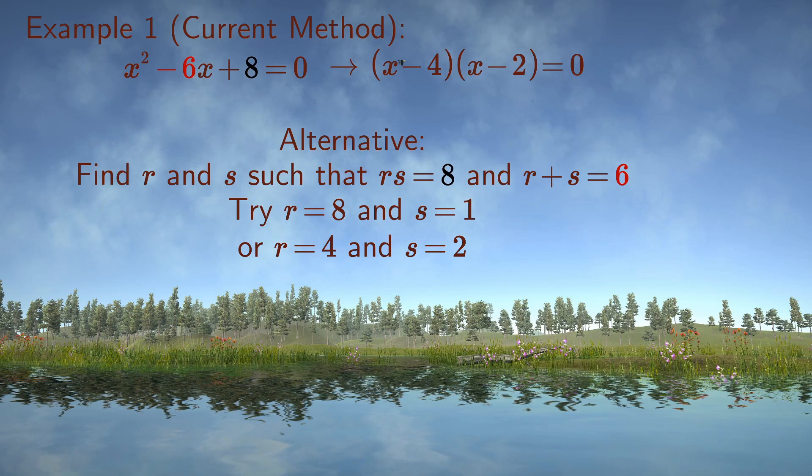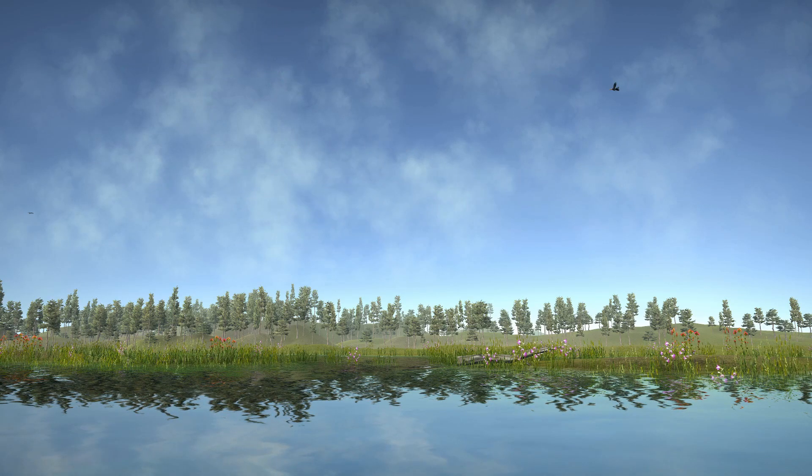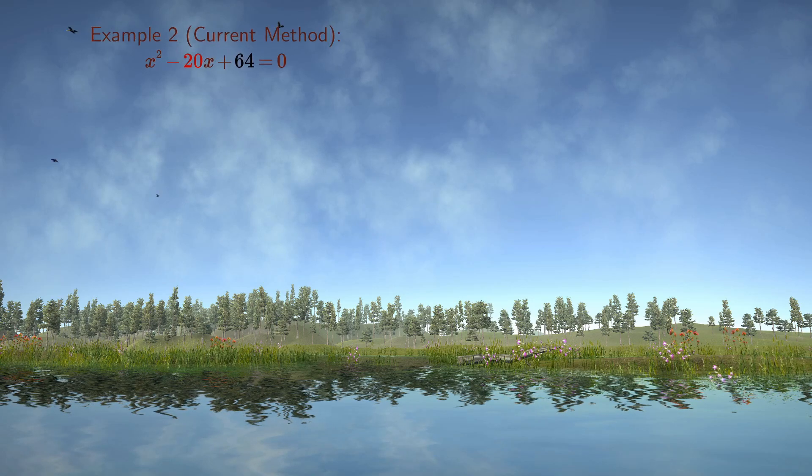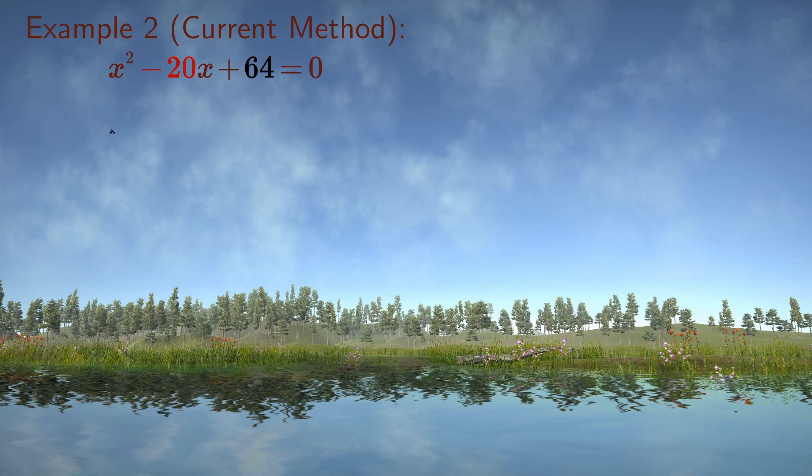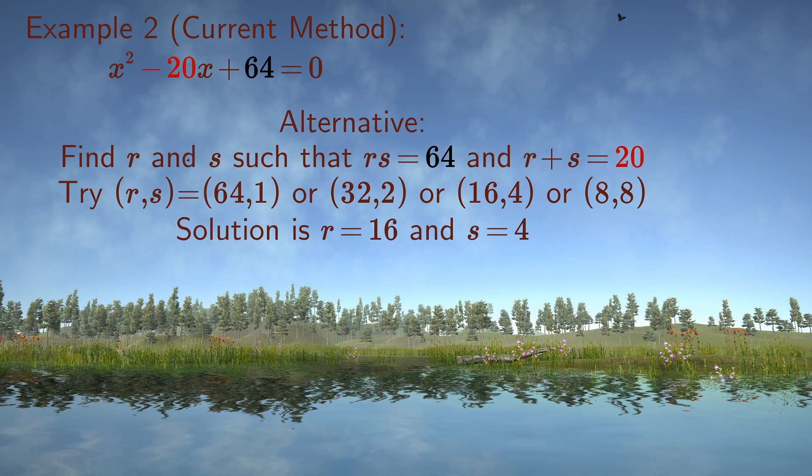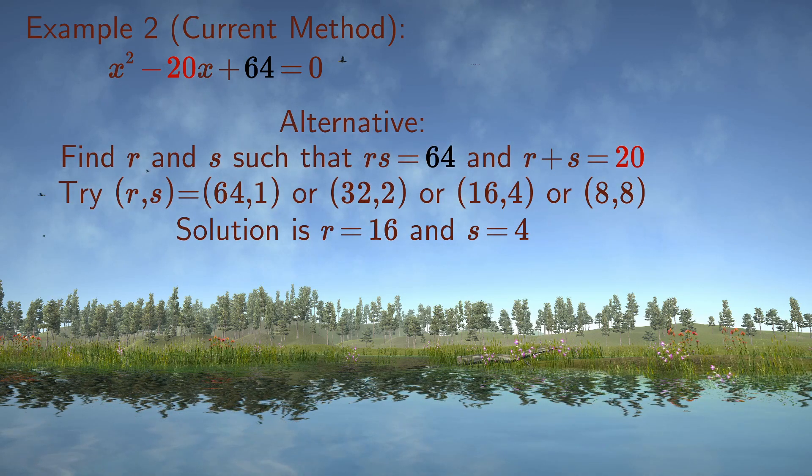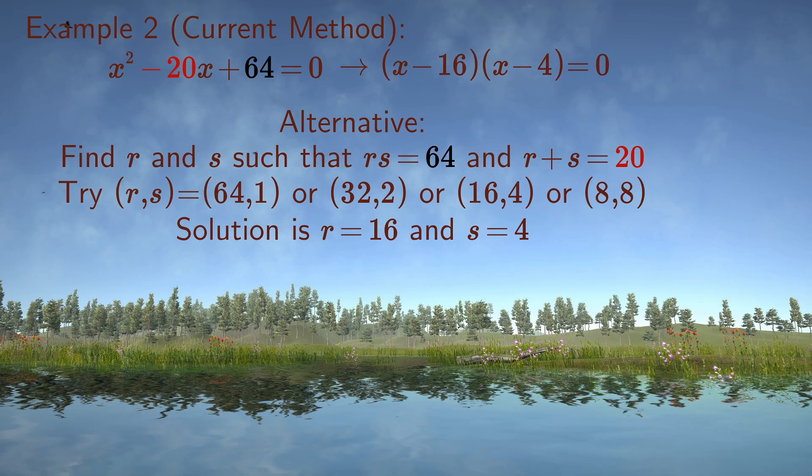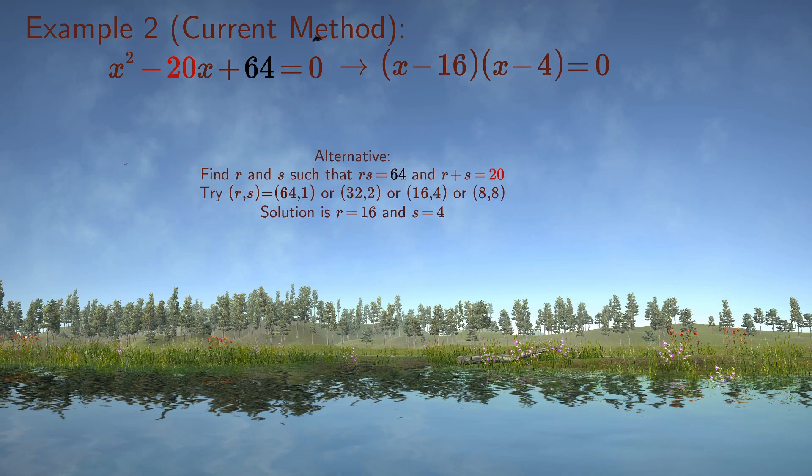But it's not always that easy to test all the factors of c over a. What about the quadratic equation x squared minus 20x plus 64 equals zero? It is now more difficult to see that the roots are 16 and 4, since 16 times 4 equals 64 and 16 plus 4 equals 20.